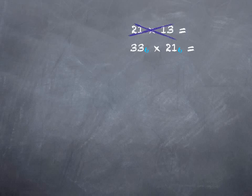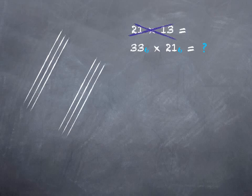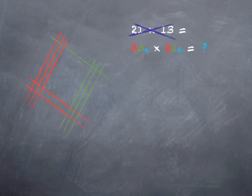So twenty-one is just three three in base six. You can kind of verify that two tens and one one are the same as three sixes and three ones. And then thirteen, which is one ten and three ones, is also two sixes and one one. So now we can draw our picture just like we did before. Three in the sixes place and three in the ones place. Two in the sixes place and one in the ones place. And again, let's color code it to keep track.